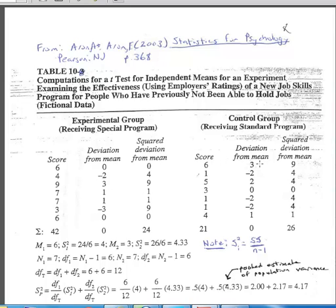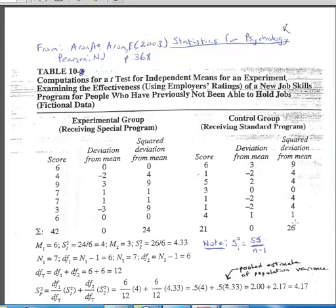We do the same thing for the control group: 3 squared is 9, negative 2 squared is 4, 2 squared is 4, and so on. For both the experimental group and the control group we sum up these squared deviations. These sums of squared deviations are referred to in statistics as sums of squares, or SS. The sums of squares for the experimental group are 24 and for the control group 26.